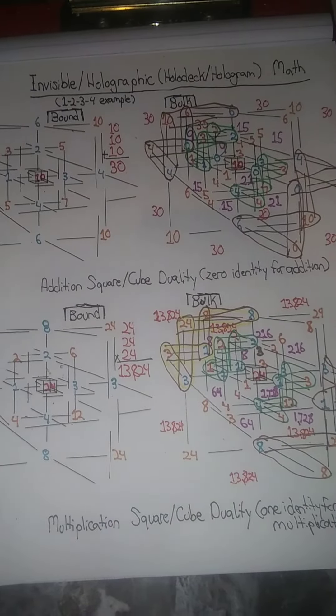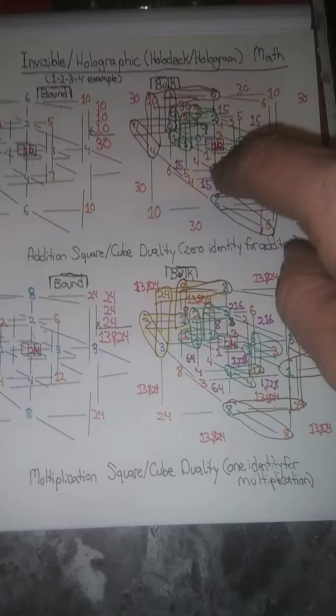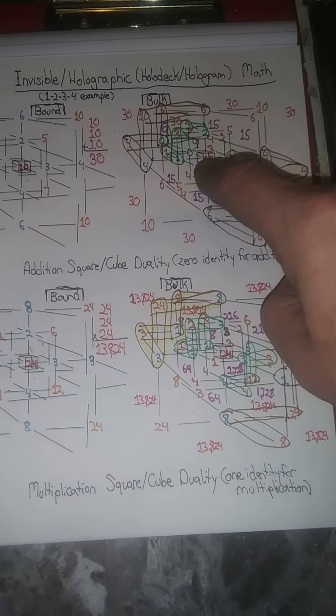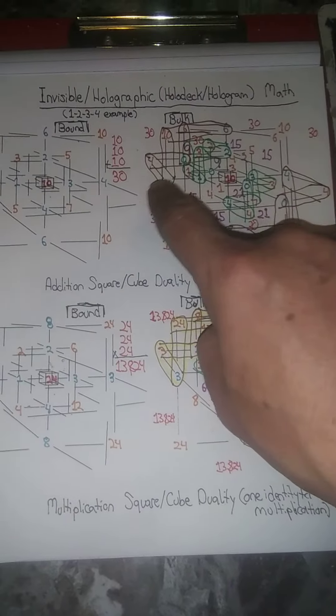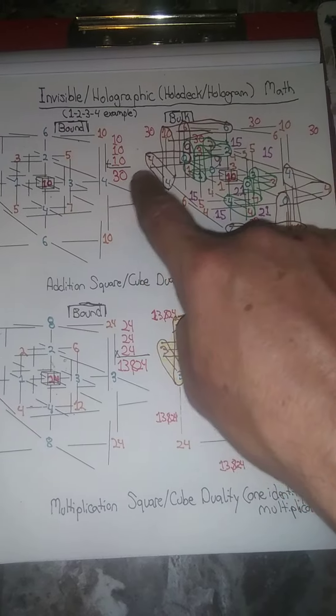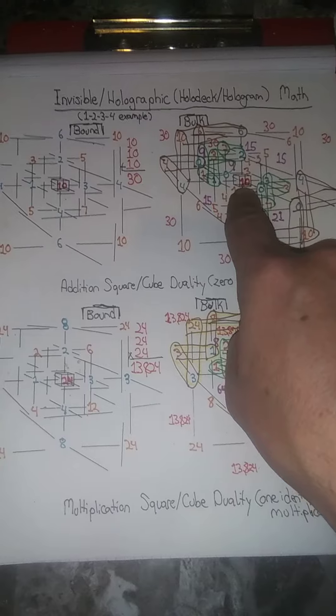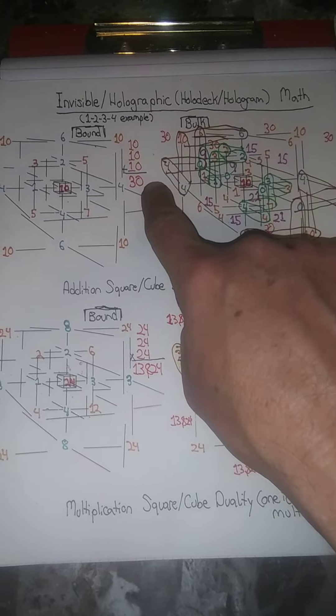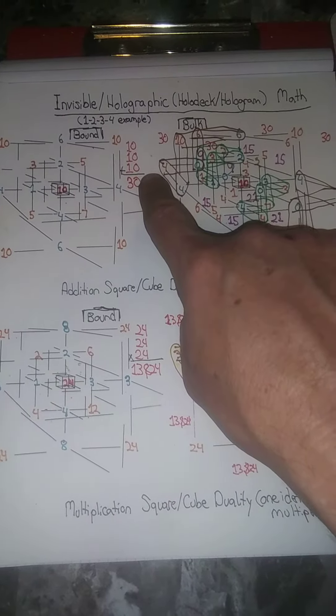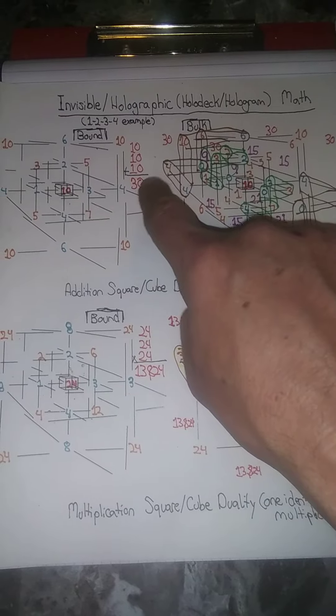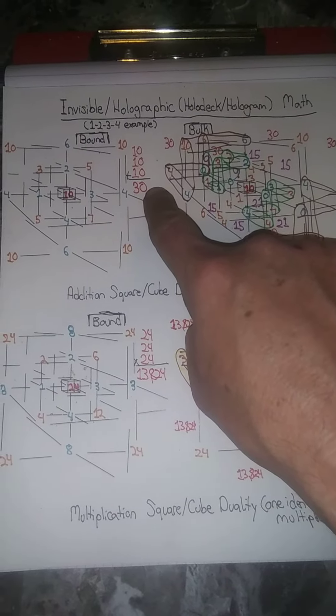Okay, again back to these. I added some more illustrations on here. First off, the inner ghost number, whether in bound or bulk form, is in addition three times the number three.